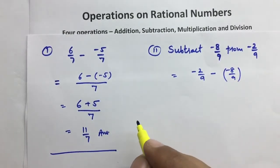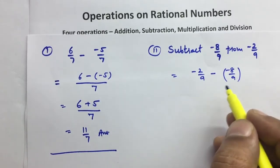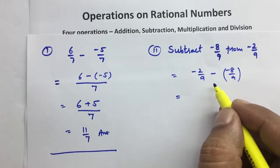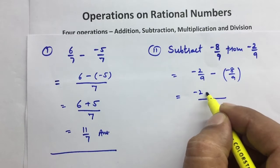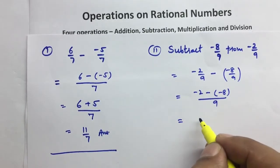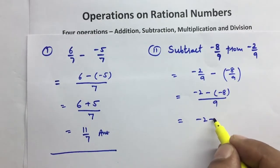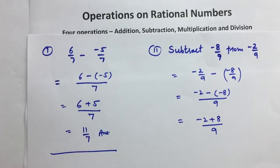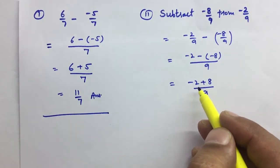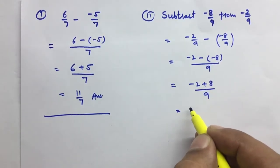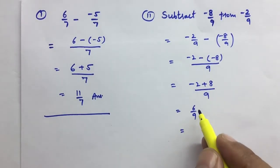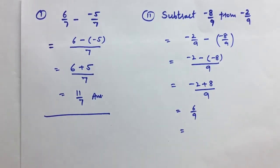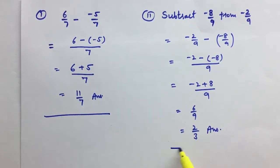Ab isme se isko minus karna hain. First of all, we have to check: is this the two rational numbers in the standard form? Yes, both are in the standard form. So now we will take LCM as 9. We will write minus 2, minus of minus 8. The rule is that negative of negative is positive. One number is positive and one is negative — positive value is greater. The difference between 2 and 8 is 6, so it is 6 upon 9. Now we have to simplify — 6 and 9, we cancel by 3. So the answer is 2/3.